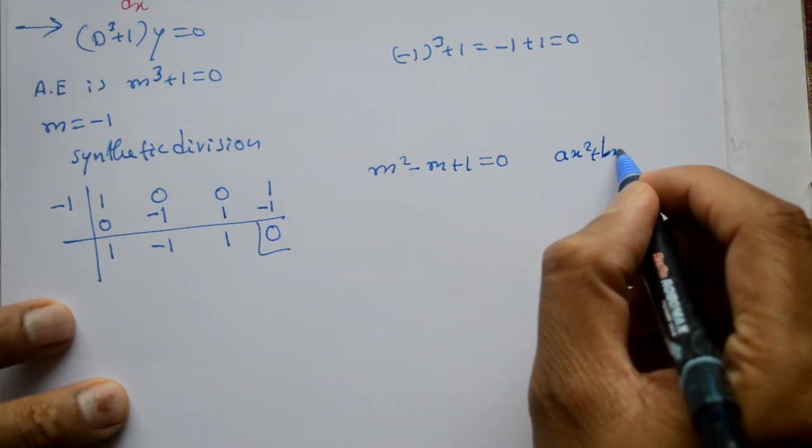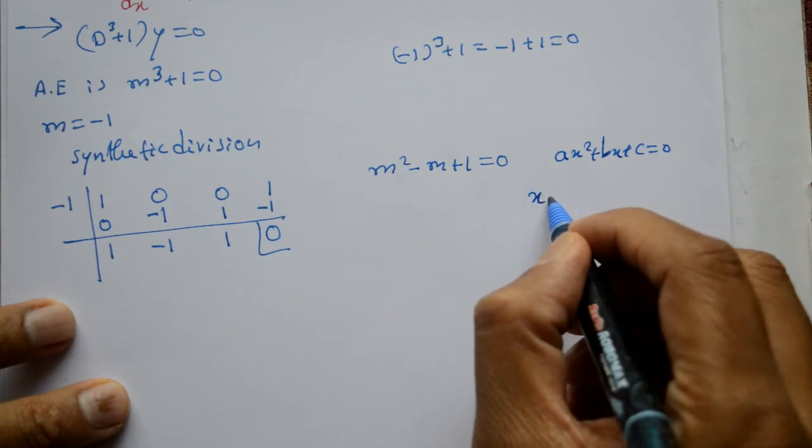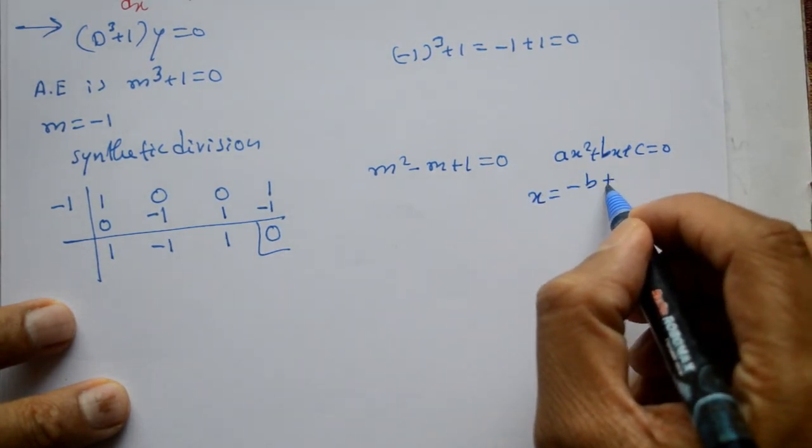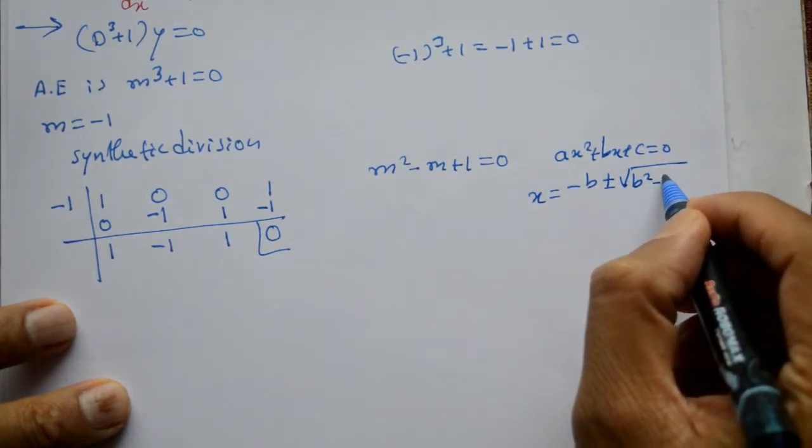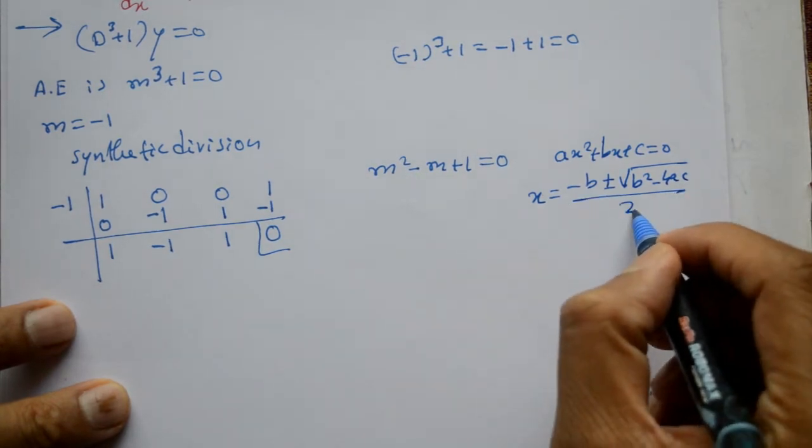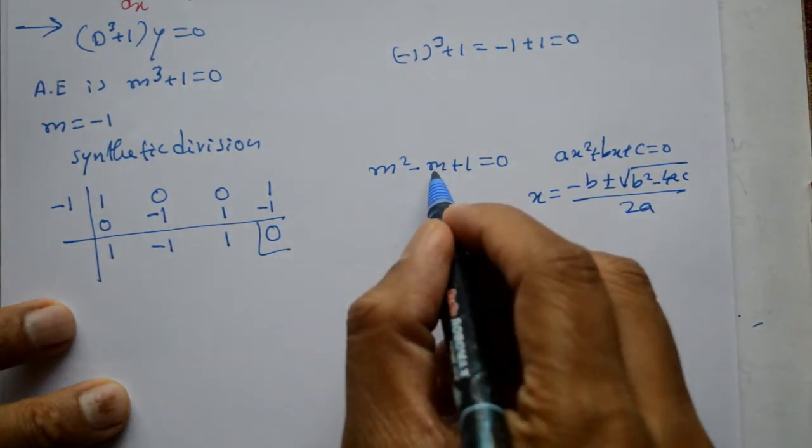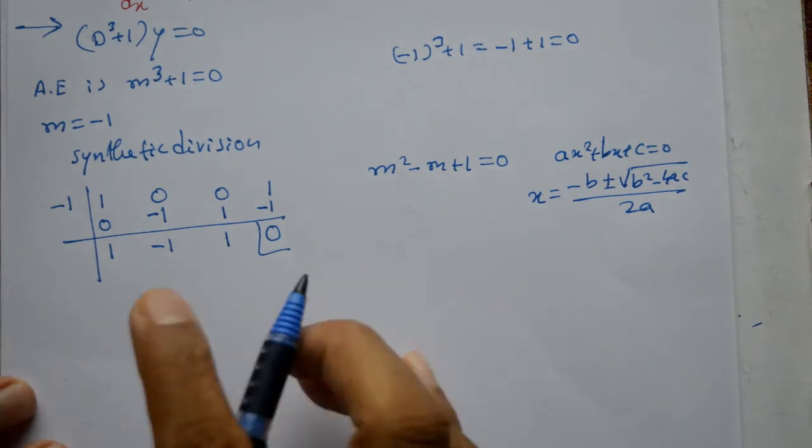ax² + bx + c = 0 hai. x is equal to kya aayega? Minus b plus or minus square root of b² - 4ac divided by 2 hai. Yadhar a kya hai yadhar? 1 aayega. B kya hai? Minus 1 aay. C hai? 1 a. Ishtarah lena hai.